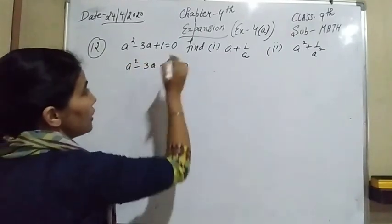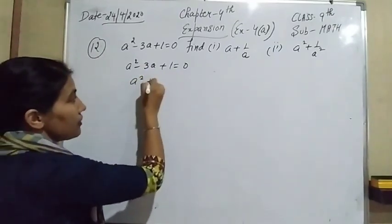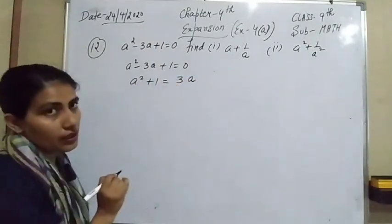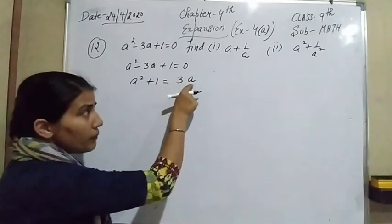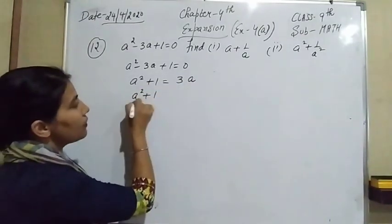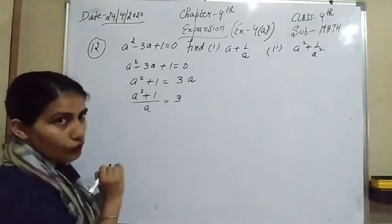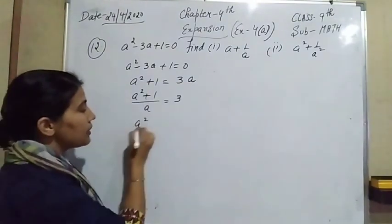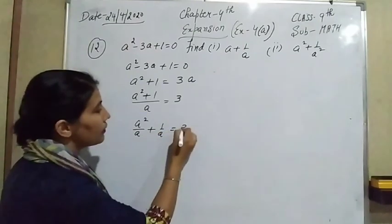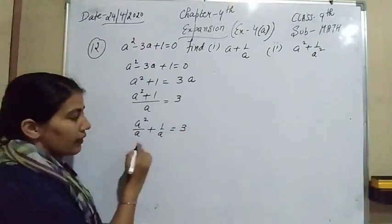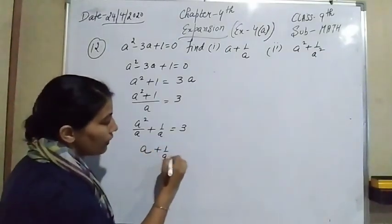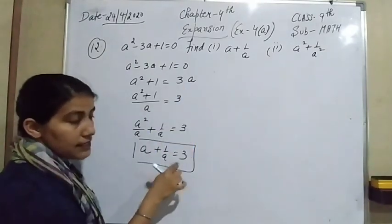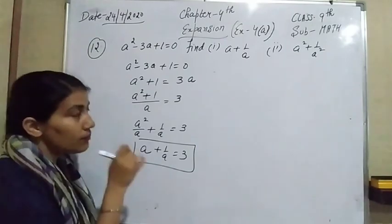We have a square minus 3a plus 1 equals 0. First, move the terms: a square plus 1 equals 3a. Now divide both sides by a: a square plus 1 over a equals 3. This cannot be separately divided, so a square over a plus 1 over a equals 3, which gives a plus 1 over a equals 3. That is our required answer.